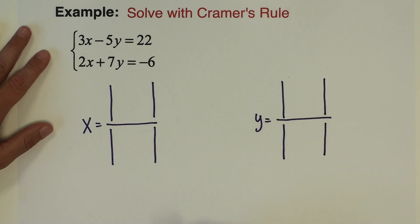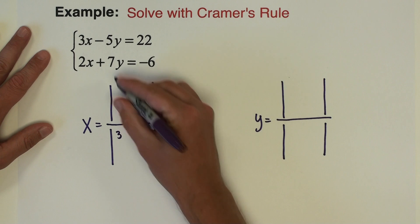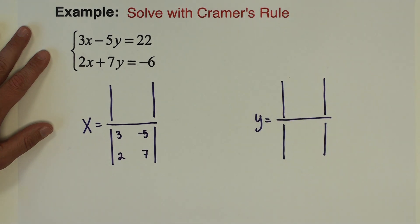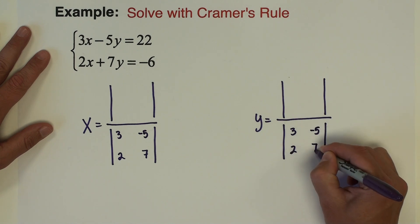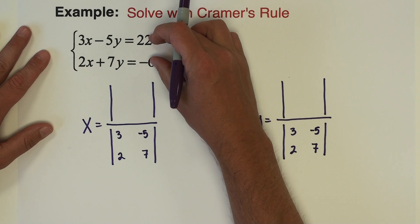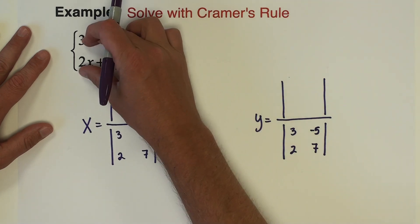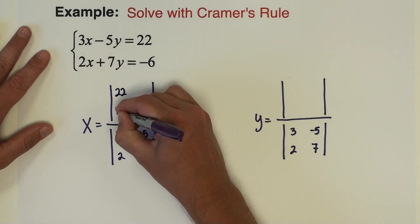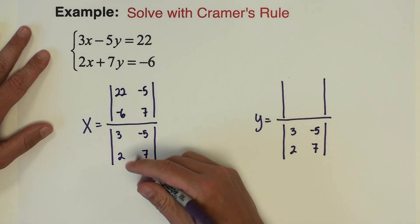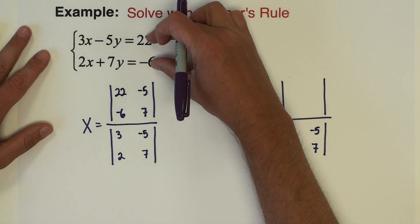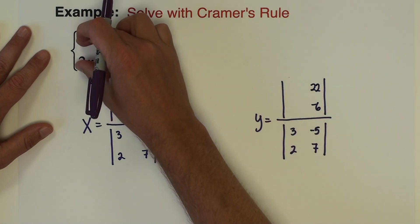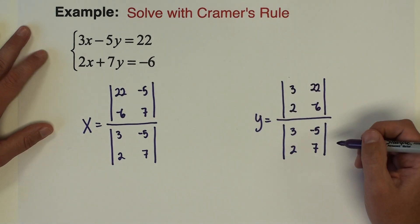The denominator of both fractions is going to be my coefficients. Make sure the minus 5y is treated as negative 5, so the denominator is 3, negative 5, 2, 7 — and it's exactly the same for the y denominator. What changes is the numerator: for x, we insert 22 and negative 6 where the x variables are, at the front, and the y numbers negative 5 and 7 stay. For y, 22 and negative 6 go in the second column and the x numbers 3 and 2 stay.